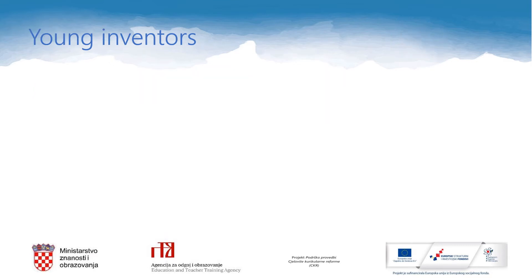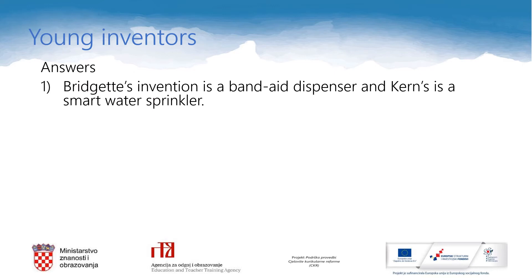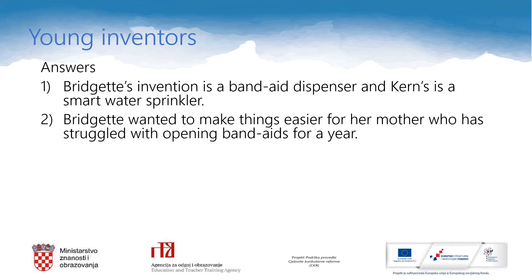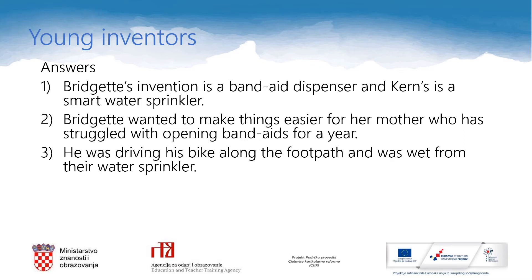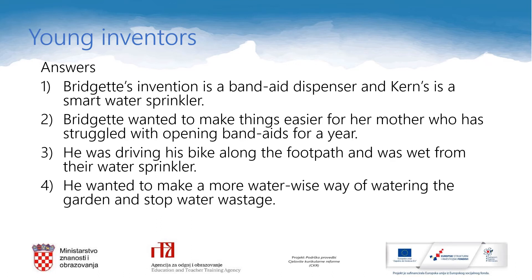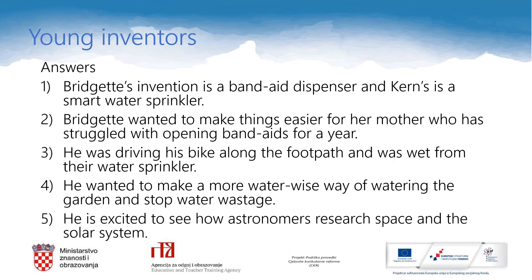I hope you're finished. Let's check the answers. What are Bridget and Kern's inventions? Bridget's invention is a band-aid dispenser and Kern's is a smart water sprinkler. How did Bridget come up with her idea? She wanted to make things easier for her mother, who had struggled with opening band-aids. What motivated Kern to invent the sprinkler? He was riding his bike along the footpath and got wet from a water sprinkler. What did he want to achieve? He wanted to make a more water-wise way of watering the garden and stop water wastage. And why is he excited to visit NASA? He is excited to see how astronomers research space and the solar system.